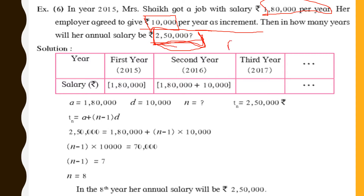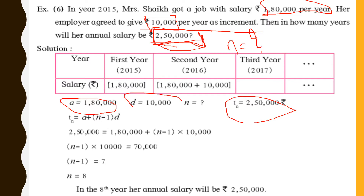You have to find the value of n. His career started in 2015, so in the first year his salary is 1,80,000. In 2016 it is 1,80,000 + 10,000, and it keeps increasing until it reaches 2,50,000. So your t_n value is 2,50,000, a is 1,80,000, and d is 10,000. You can easily find n. You already know which formula to apply — the t_n formula.